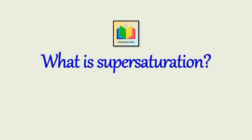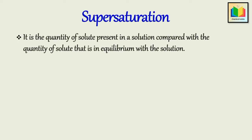The first question is: what is supersaturation? It is the quantity of solute present in a solution in which crystals are growing, compared with the quantity of solute that is in equilibrium with the solution. Consider an equilibrium solution — solid solute plus liquid solvent. If we disturb this equilibrium either by cooling the solution or evaporating a portion of the solvent, then the quantity of solute will exceed the equilibrium concentration. This condition is called supersaturation, and the solution is called a supersaturated solution. The system will then try to attain a new state of equilibrium by expelling or precipitating excess solute in the form of crystals. This process of forming crystals is called crystallization, and the concentration difference driving force is called supersaturation.